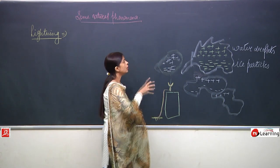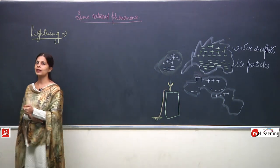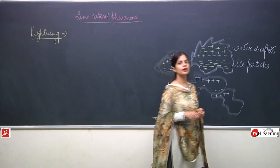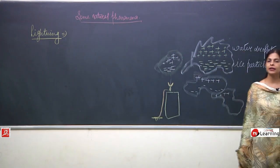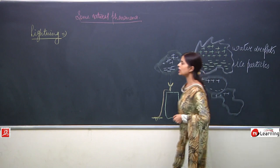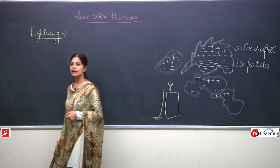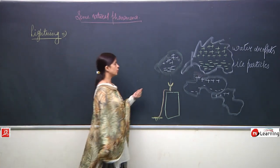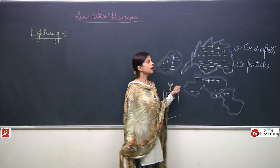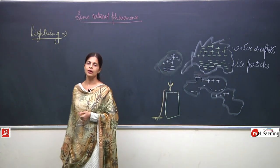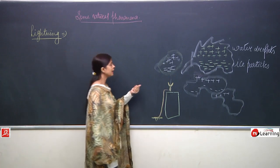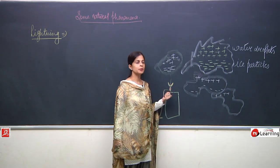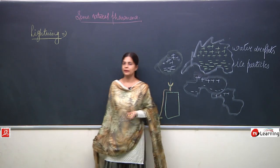So this was all about lightning. We are going to write all this and then also discuss how to prevent ourselves from lightning and what measures have to be taken when lightning occurs. First, we discussed why lightning occurs in the sky, and then we studied the lightning conductor.